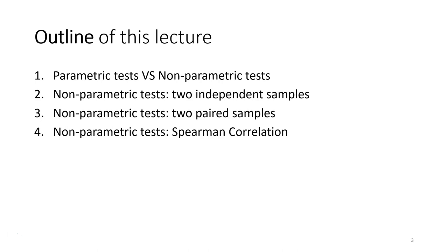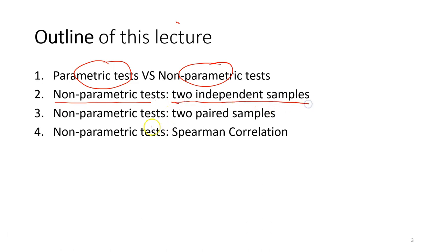This lecture will first briefly discuss the differences between parametric and non-parametric tests. After that, we'll learn a non-parametric test for two independent samples, followed by another two-sample test for paired samples. Finally, we'll learn how to calculate correlation coefficients using non-parametric calculations — a correlation different from the Pearson correlation.